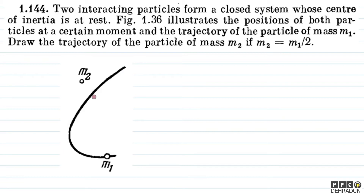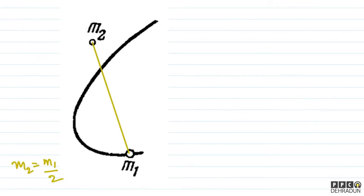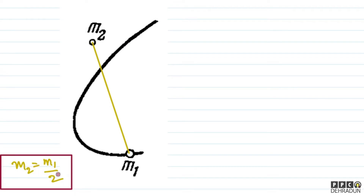First of all, we have to give the diagram and locate the center of mass. The center of inertia is at rest. The data we have is that M2 is equal to M1 upon 2, so we have to understand that M1 is twice as heavy as M2.